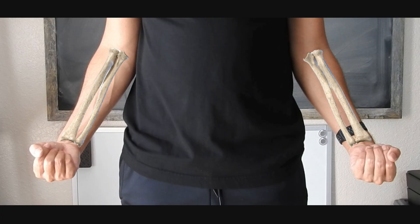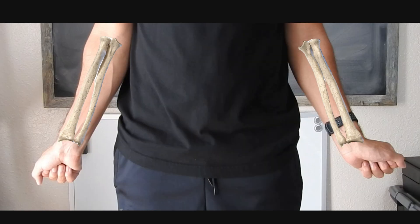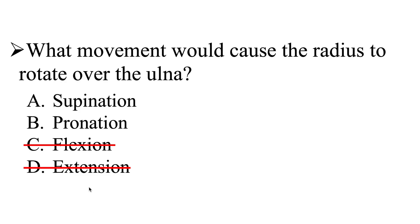Let's look at flexion first. When we flex at the wrist, neither the ulna nor the radius have moved — they stay parallel. So flexion is not the right answer. Same with extension — nothing moved, the ulna and radius are still parallel. We can go ahead and eliminate both flexion and extension, leaving us with either supination or pronation — a 50/50 chance.